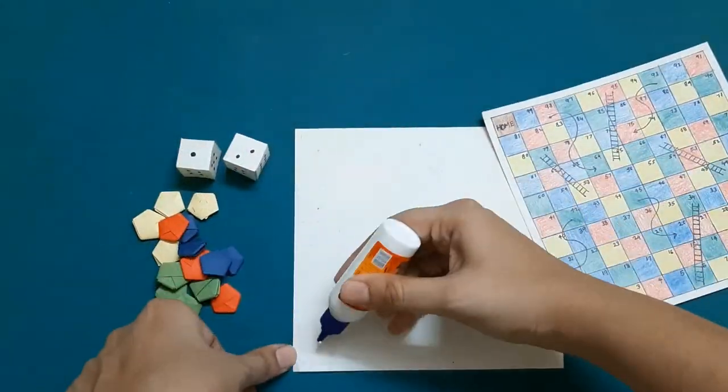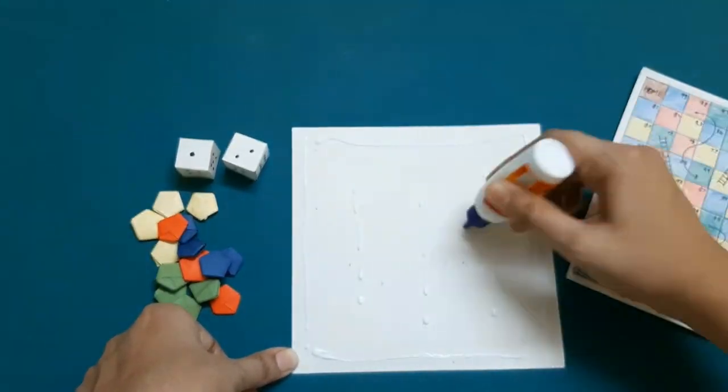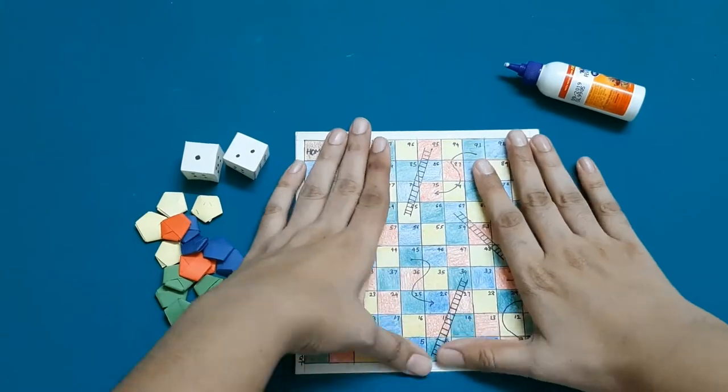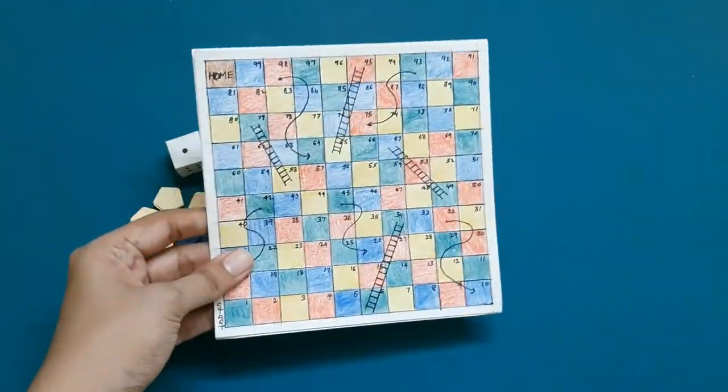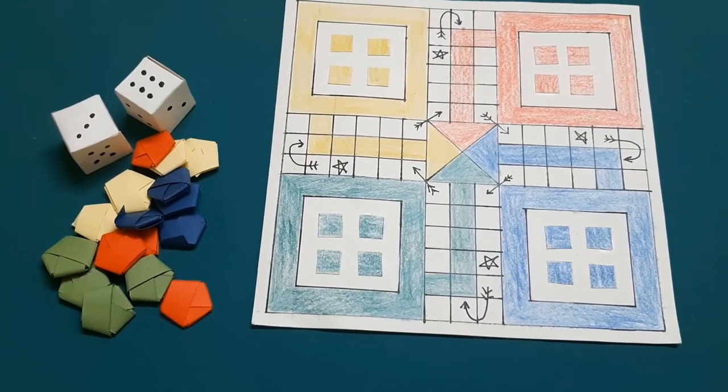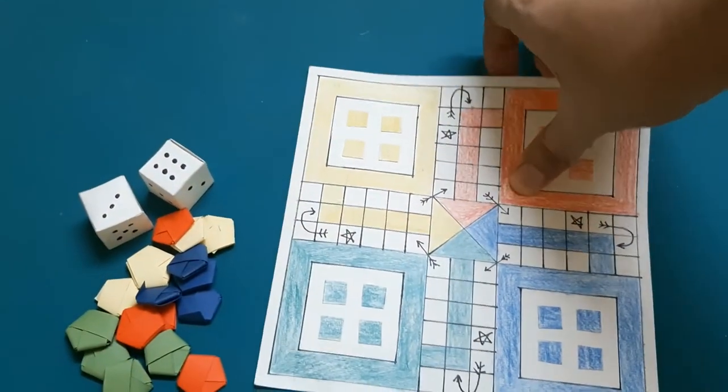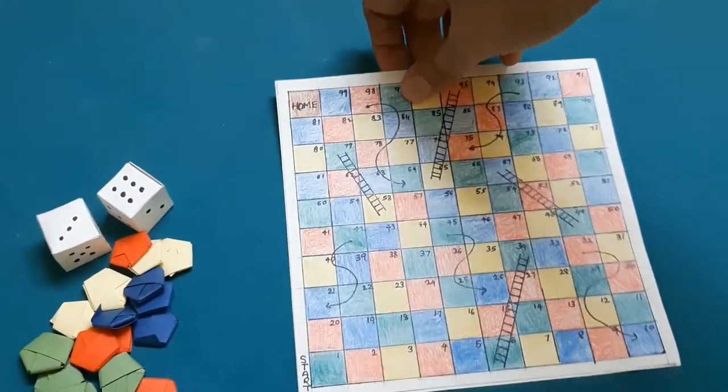So guys, at the end I'll go ahead and paste both my boards, which are of the exact same size, which is 16 centimeter by 16 centimeter, using glue. And so here are my two-in-one Snakes and Ladders and Ludo game. If you like my video please do comment and share it with your friends. Thank you so much for watching and do subscribe.